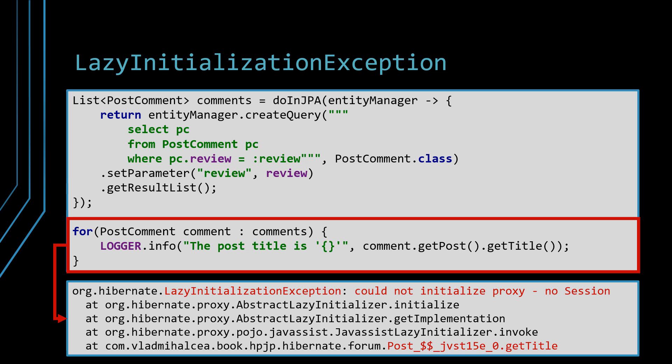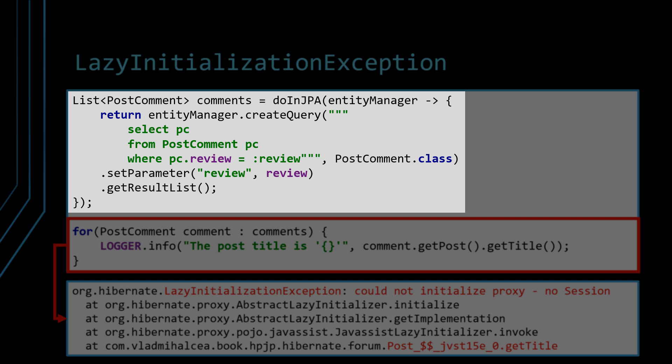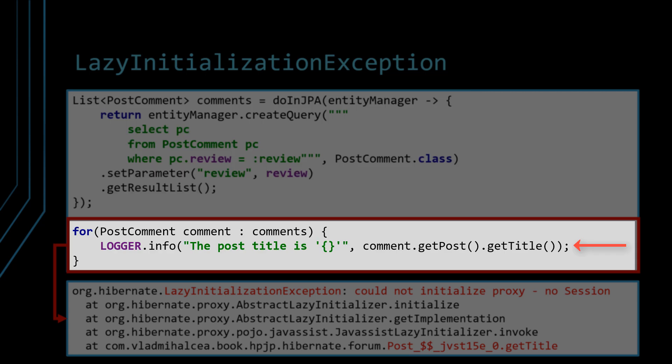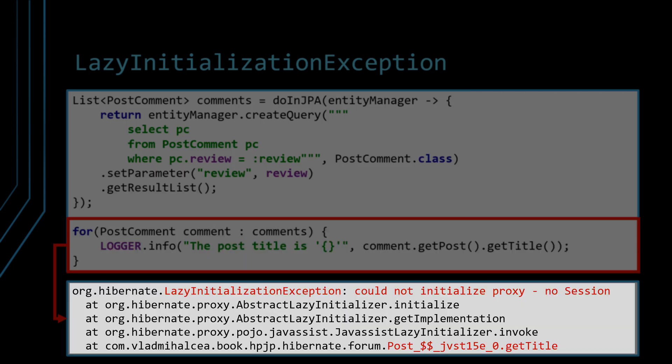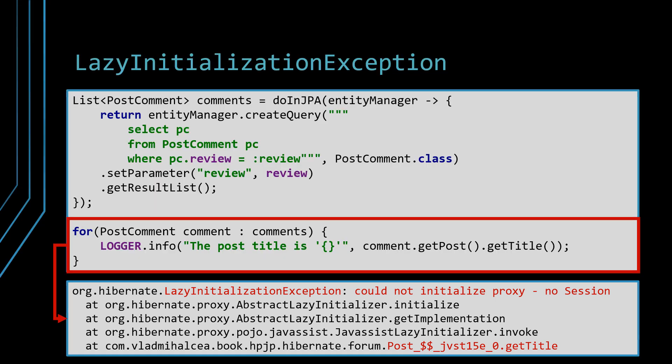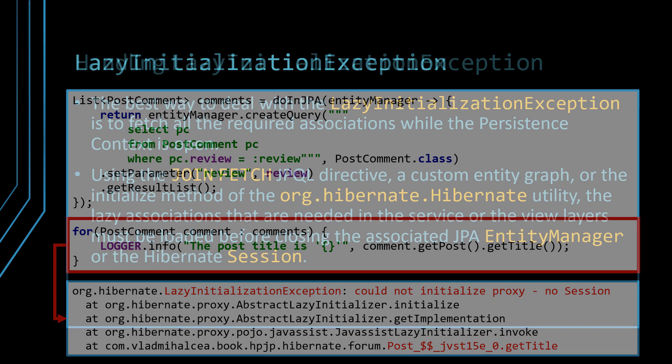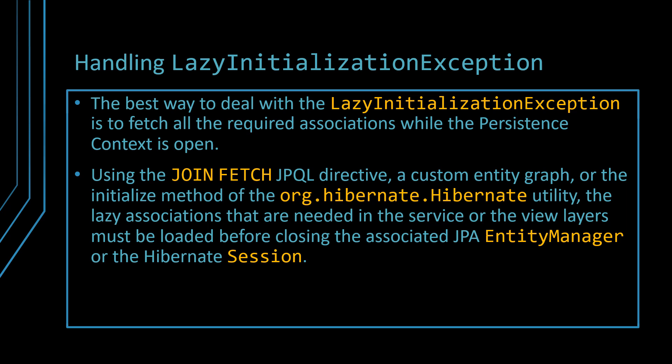As we already saw, for performance reasons, the fetch type eager strategy is to be avoided since we are better off defining the fetch plan on a per-query basis. However, the fetch type lazy strategy is not without issues. For instance, if we don't initialize a lazy proxy association and the associated persistence context gets closed, then when trying to access any non-identifier property of the proxy object, a LazyInitializationException will be thrown, because the proxy can only be loaded as long as its persistence context is open and connected to the database. The best way to deal with the lazy initialization exception is to fetch all the required associations while the persistence context is open. Using the JOIN FETCH JPQL directive, a custom entity graph, or the initialize() method of Hibernate utility, the lazy associations needed in the service or view layers must be loaded before closing the associated JPA EntityManager or Hibernate session.